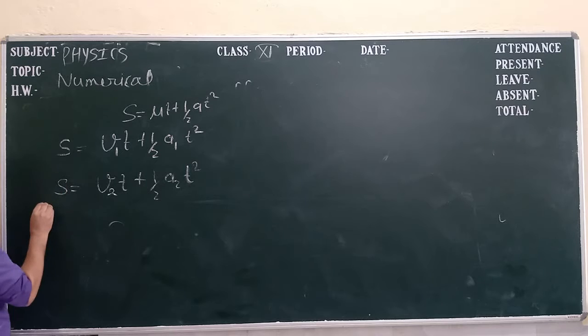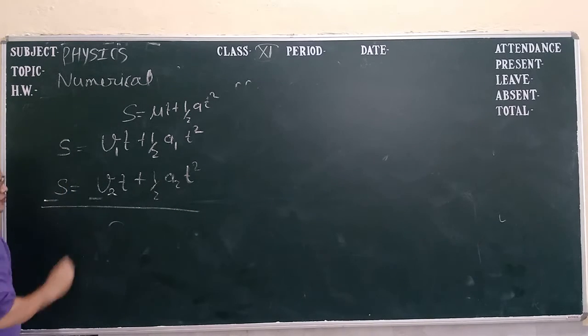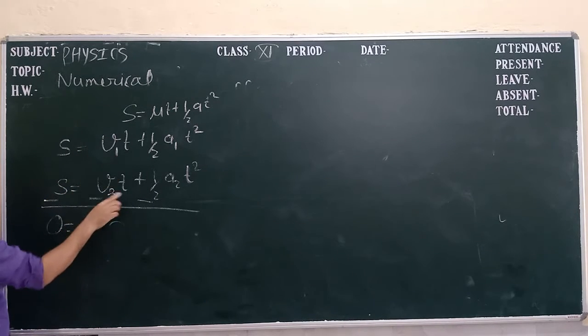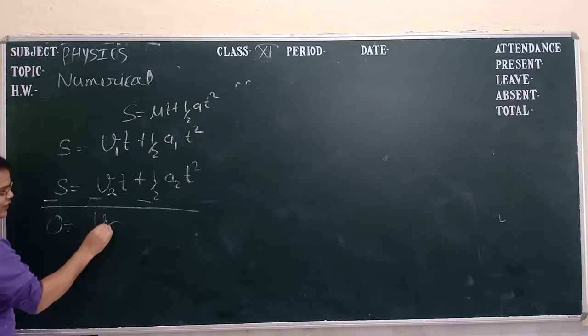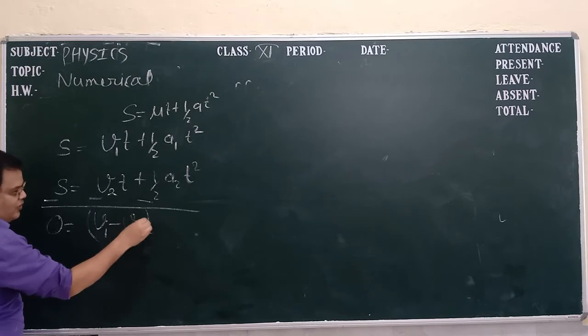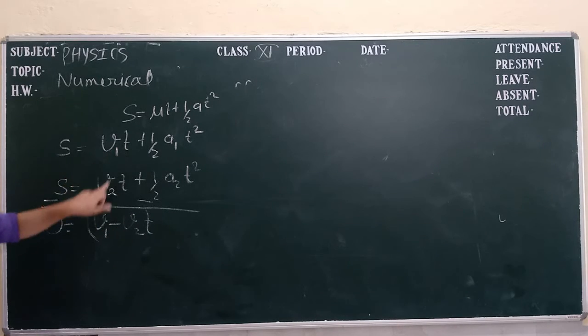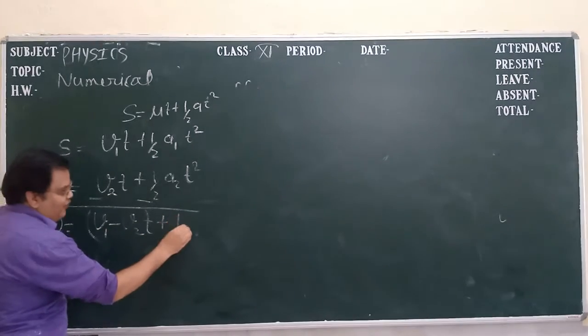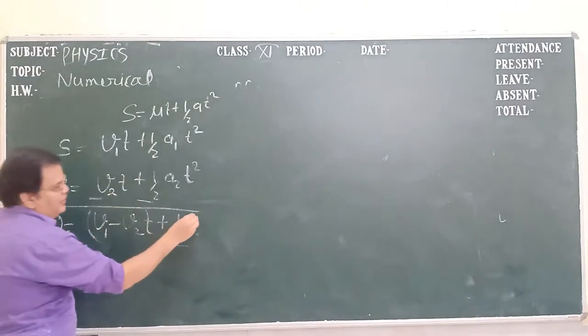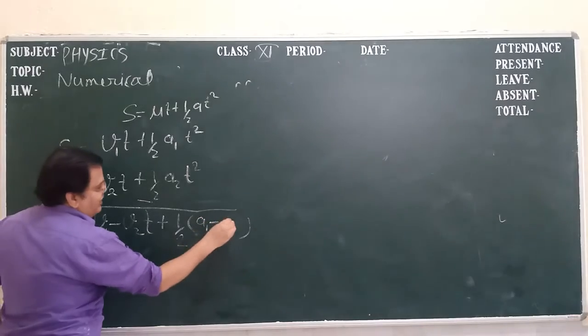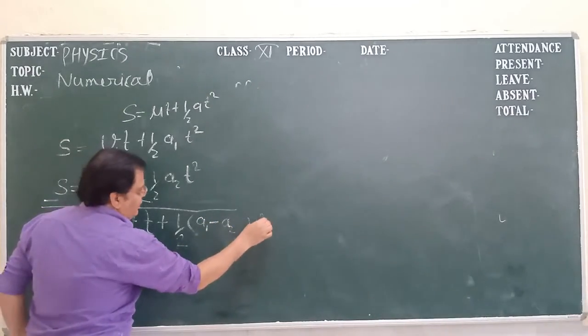Now subtracting both the equations, what will you get? You get 0 here. T is the common, so what will you get? v1 minus v2, or v1t minus v2t, t is the common, plus 1 by 2 common, and we got a1 minus a2t square.